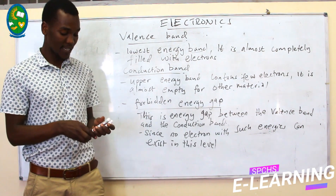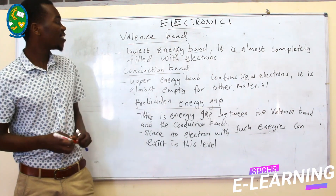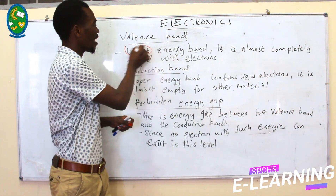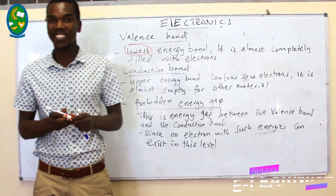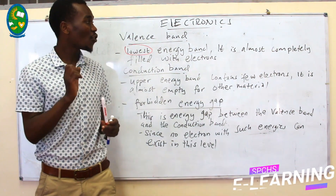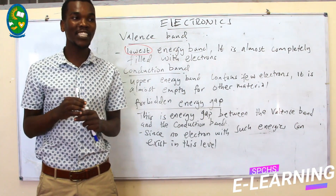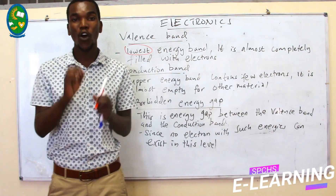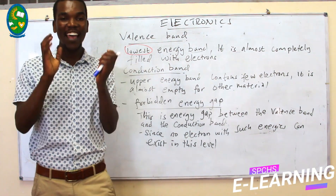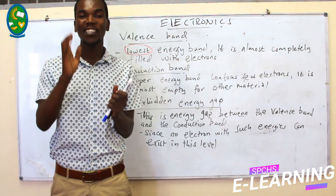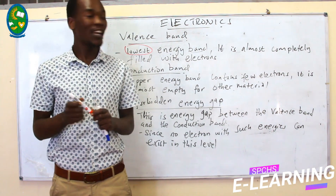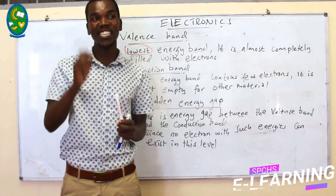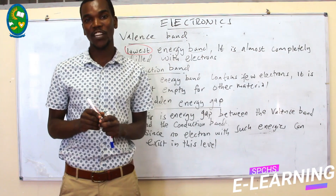Starting with the first one, which is the valence band. A valence band is the lowest energy band, which is almost completely filled with electrons. At this level, all electrons are there having the lowest energy in an atom. Normally, we are talking about electrons which are quite very near to the nucleus of an atom.